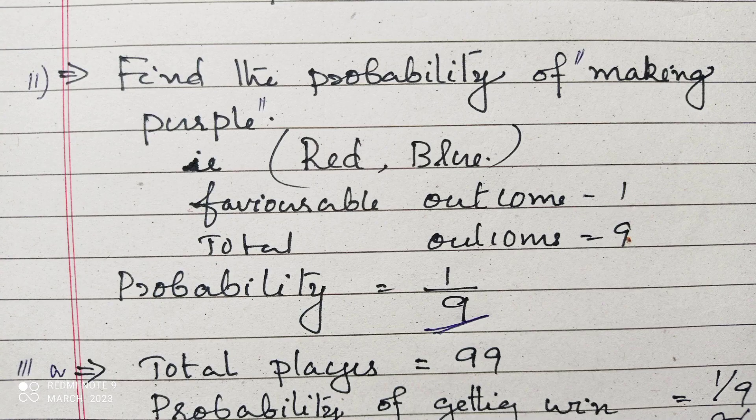The second question: find the probability of making a purple. The total number of outcomes is 9. Making purple means we have to get red and blue, which is only 1 outcome. Therefore, the favorable outcome is 1 and the total outcome is 9. Therefore, the probability is 1/9.